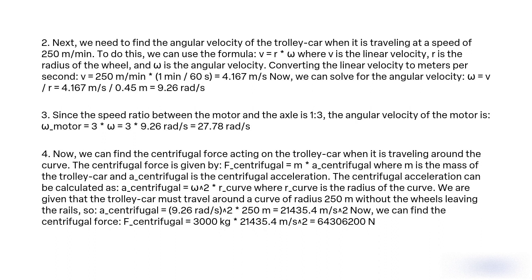Now we can find the centrifugal force acting on the trolley car when it is travelling around the curve. The centrifugal force is given by F_centrifugal = m × a_centrifugal, where m is the mass of the car and a_centrifugal is the centrifugal acceleration, calculated as a_centrifugal = ω² × r_curve, where r_curve is the radius of the curve. The car must travel around a curve of radius 250 m, so a_centrifugal = (9.26 rad/s)² × 250 m = 21,435.4 m/s². Therefore, F_centrifugal = 3,000 kg × 21,435.4 m/s² = 64,306,200 N.